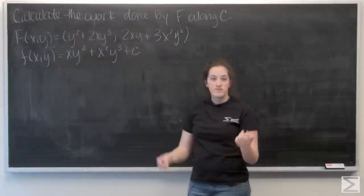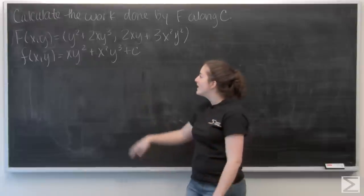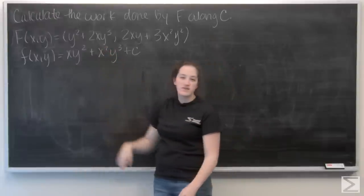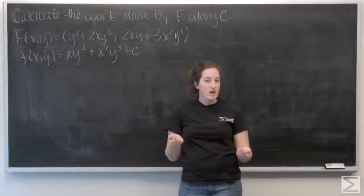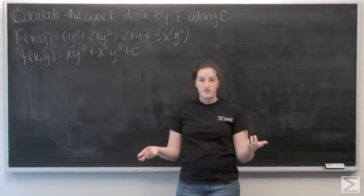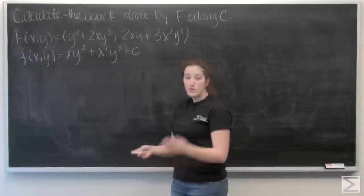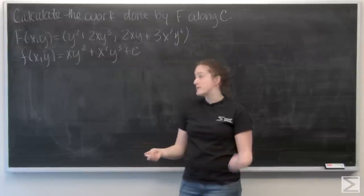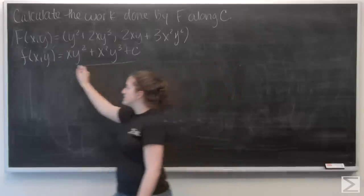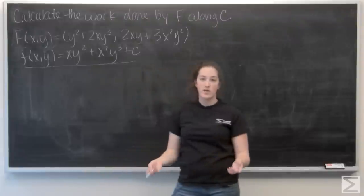Well, in a previous problem (link here), I was given this vector field and I was asked to find if it was conservative or not. And if it was, I was asked to find the potential function. Well, it was conservative, and I did find a potential function, and it is this. So we're going to use that to help us on this problem.